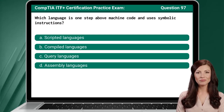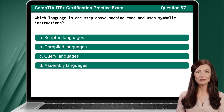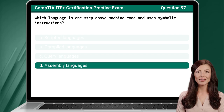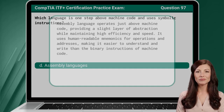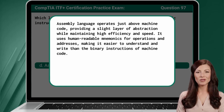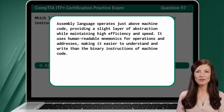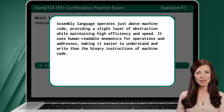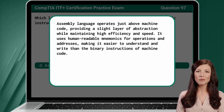Question 97. Which language is one step above machine code and uses symbolic instructions? The answer is D: Assembly language. Assembly language operates just above machine code, providing a slight layer of abstraction while maintaining high efficiency and speed. It uses human-readable mnemonics for operations and addresses, making it easier to understand and write than the binary instructions of machine code.